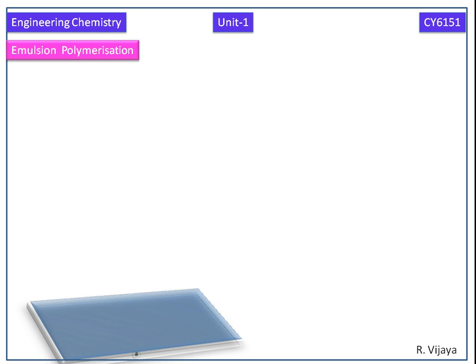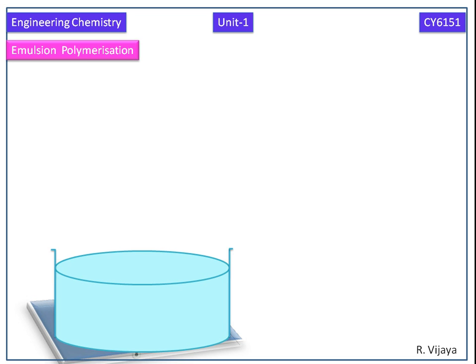This is the beaker which is placed on the thermostat. It contains water, and we are adding monomers. Now it is a heterogeneous medium, so the system is stirred well.